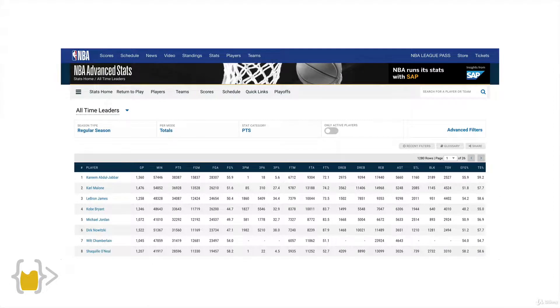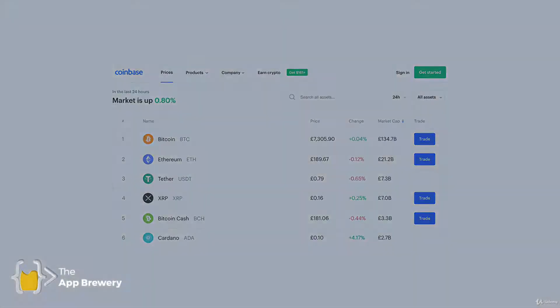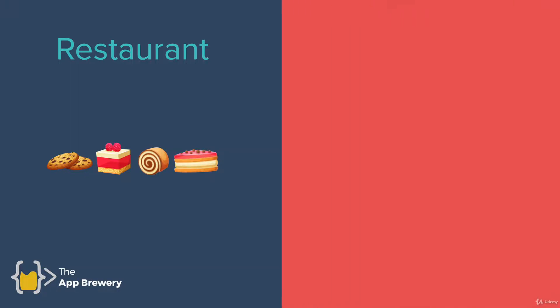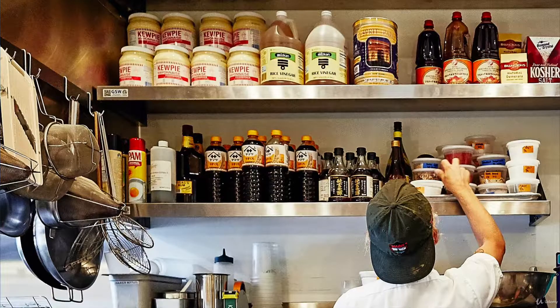So essentially you can imagine these websites as a sort of restaurant, and the data that powers these websites as the kitchen behind the scenes. We can't really go to a restaurant as a member of the public and just go into the kitchen and start raiding their cupboards.